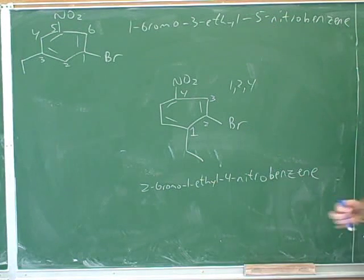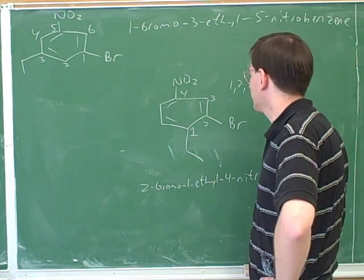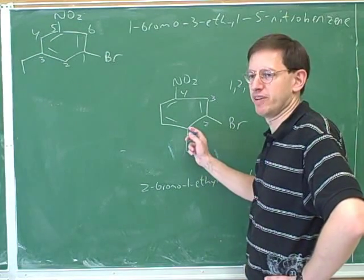So it's important to have these two examples in the same place in your notes so you can compare these two situations. Normally we choose the number one carbon to be in the position that gives us the lowest possible set of numbers.